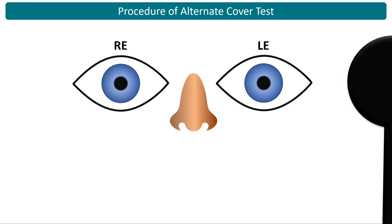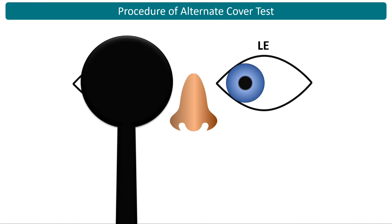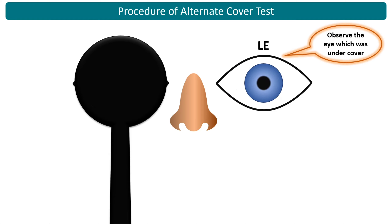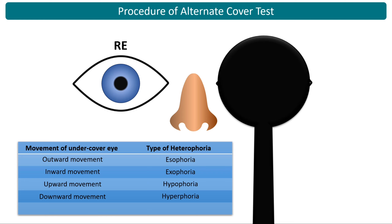For example, cover the left eye and keep the occluder for 2 to 3 seconds, then shift the occluder horizontally to cover the right eye and keep it for 2 to 3 seconds. Observe the eye which was under cover as it is uncovered. If the eye under cover moves outward on uncovering, it is esophoria. Inward movement is exophoria. Upward movement is hypophoria. Downward movement is hyperphoria. If there is no movement, it is orthophoria. Repeat the test at near distance too.